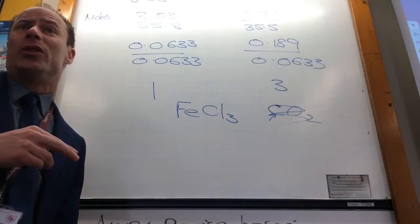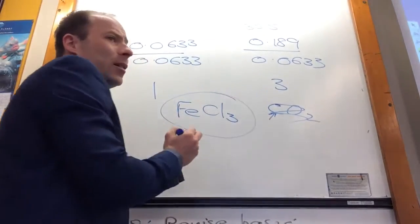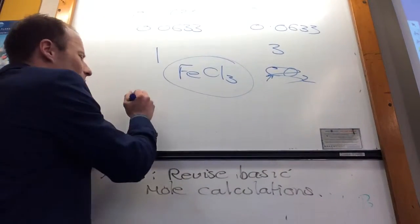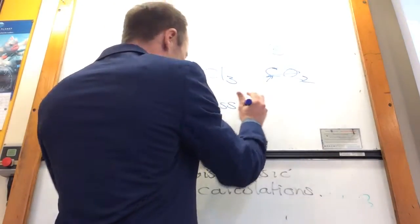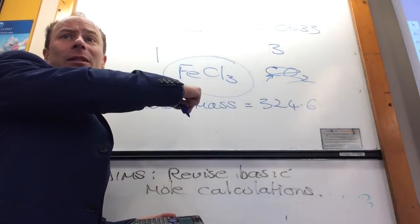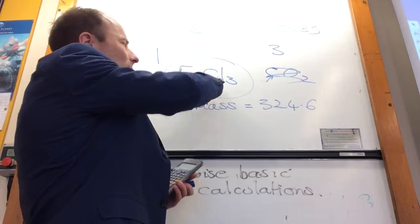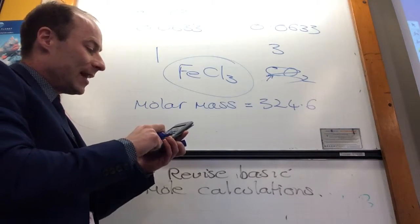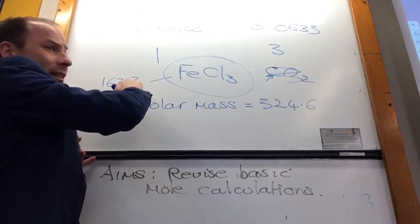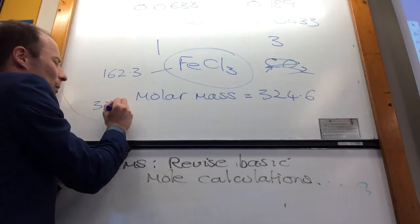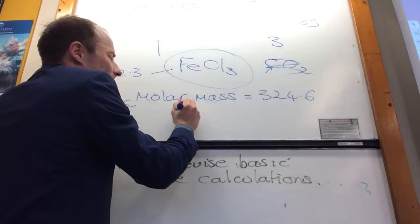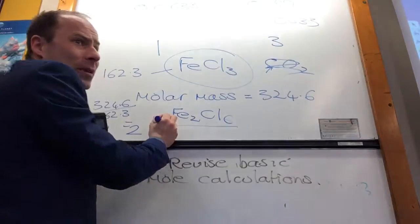If you wanted to make sure that was the same as the molecular formula, what would you need to know? You'd need to know the molar mass of that. So if they then told you the molar mass of the compound is equal to 324.6, how would you convert that into the molecular formula? If you add up iron, which is 55.8 plus 3 chlorines, that comes to 162.3. So the molar mass of that is 162.3. If you take 324.6 divided by 162.3, you get it to be 2. So the molecular formula in that case would be Fe2Cl6. So you times everything by 2.